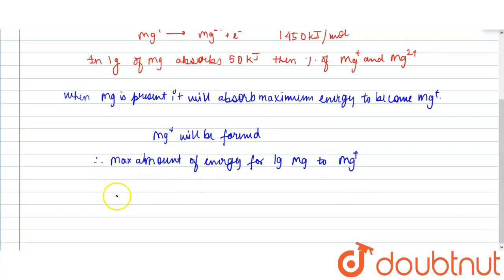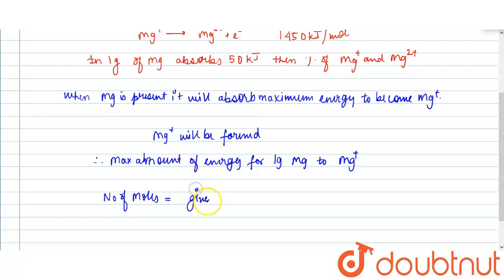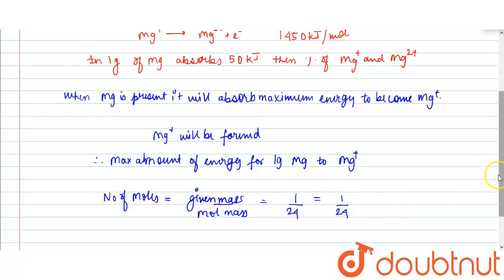The number of moles of magnesium in 1 gram would be: number of moles = given mass ÷ molecular mass = 1 g ÷ 24 = 1/24 moles.